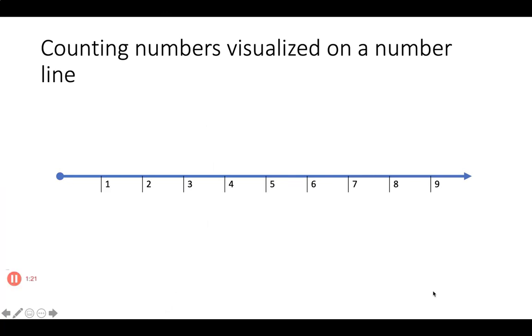Now counting numbers can be visualized on a number line as is shown in the figure here. The starting point is known as the origin, and the points that are equally spaced from the origin towards the right are labeled with the counting numbers. When a number is paired with a point, it is called the coordinate of the point.